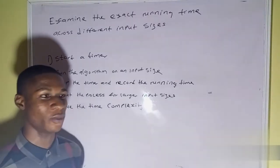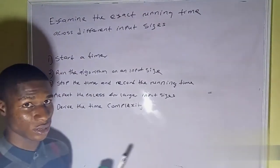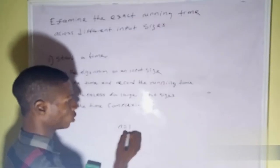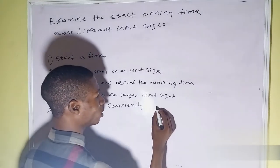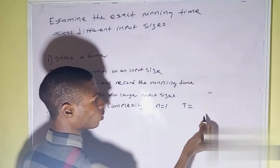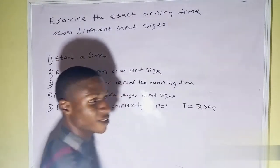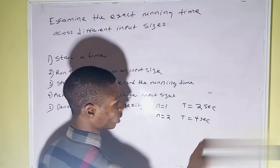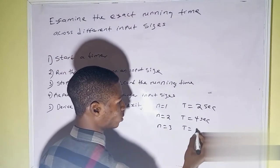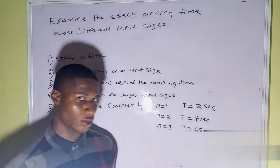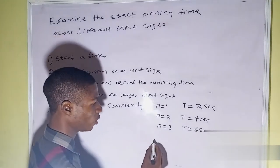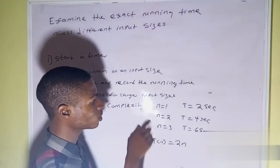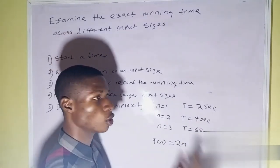Let me give you an example to demonstrate this. When you run the algorithm where n equals 1, T equals 2 seconds, because we are measuring the exact runtime. Where n equals 2, T equals 4 seconds. Where n equals 3, T equals 6 seconds. If you check this, you can derive T of n to be equal to 2n, because each time you increase the size of n by 1, the time is doubled.